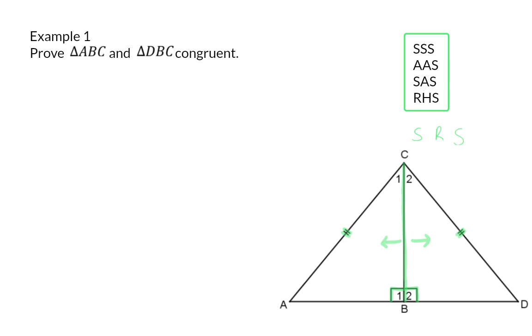Because our first pair of sides are also the hypotenuse of these two triangles, we're going to make use of our fourth option of right angle, hypotenuse and side.